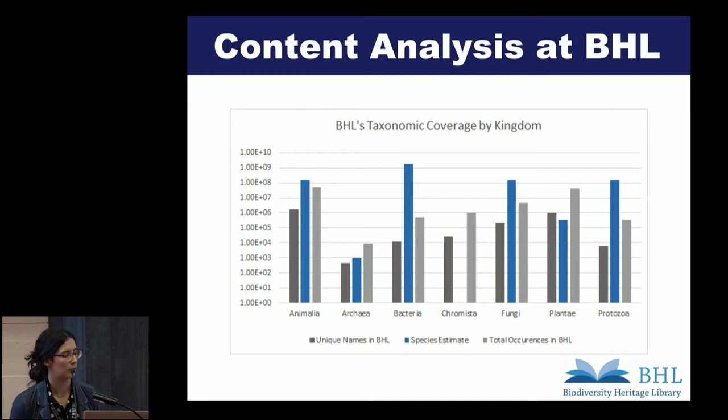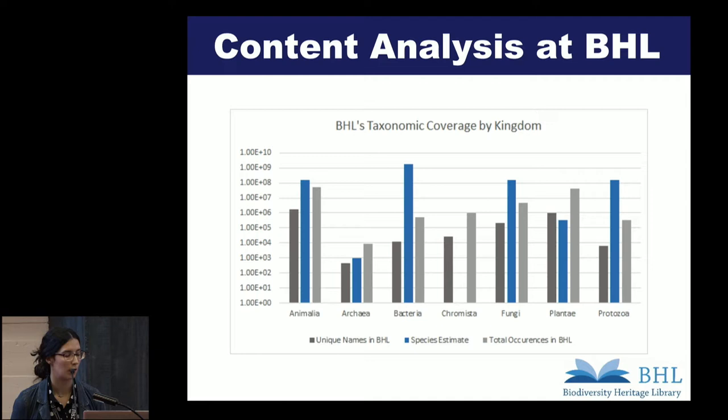This is the whole BHL corpus split into their taxonomic kingdoms. The unique names are in dark gray, and the total occurrence of names are in the light gray, and in the middle are a species estimate of the names. This gives the collections committee an idea of which kingdoms are better represented in BHL, and there is potential to use visualizations like this to browse through the collection.